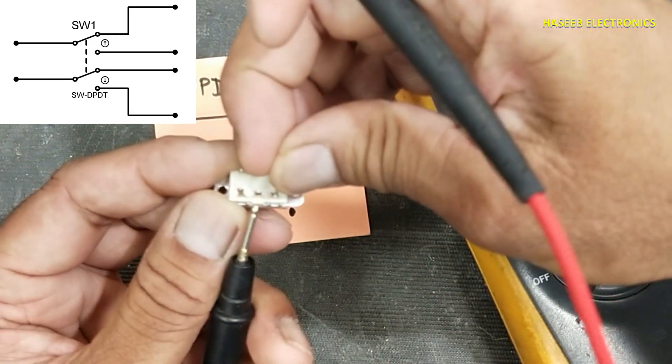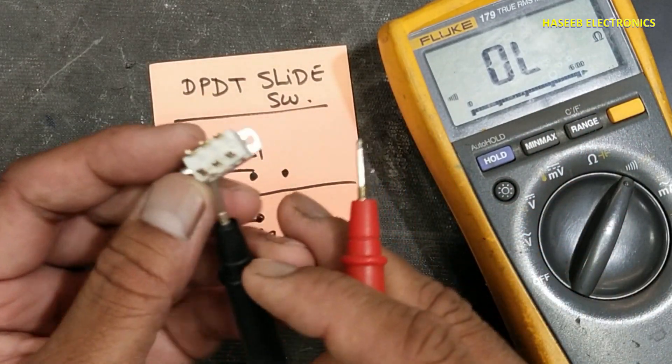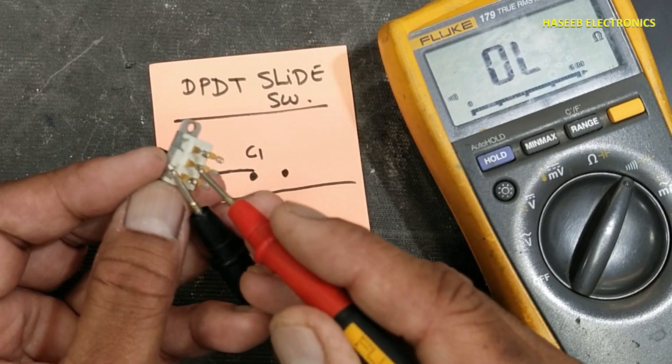These two parts and these two points. When we shift this switch to other side, the second side, it will make connection between these two points, here and here.